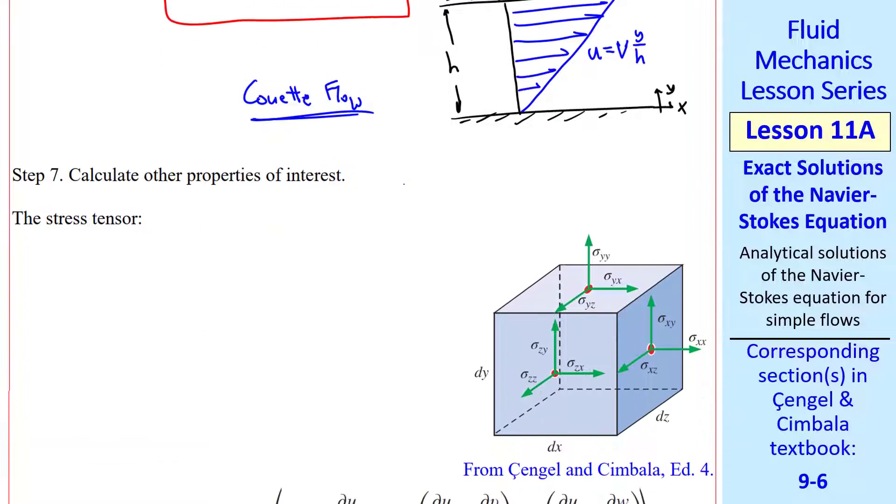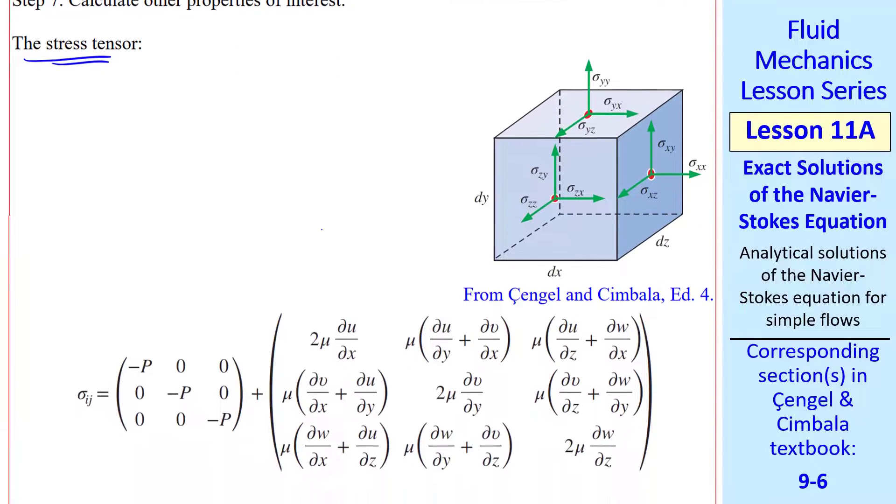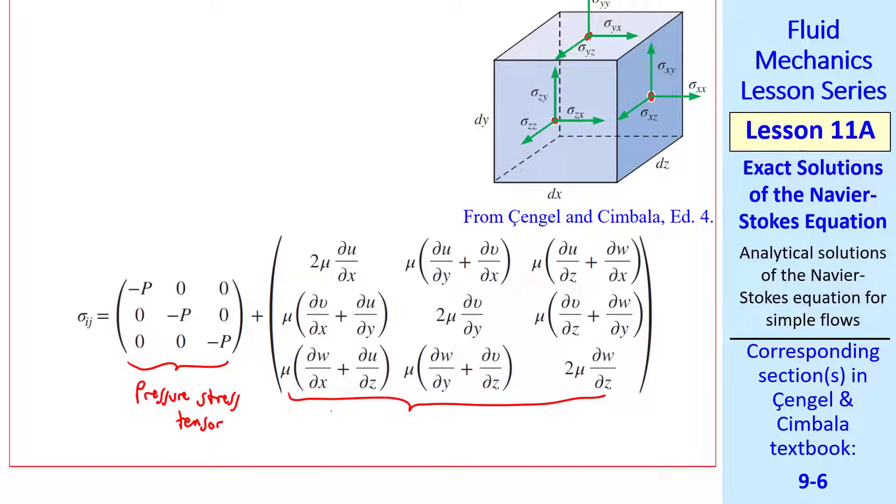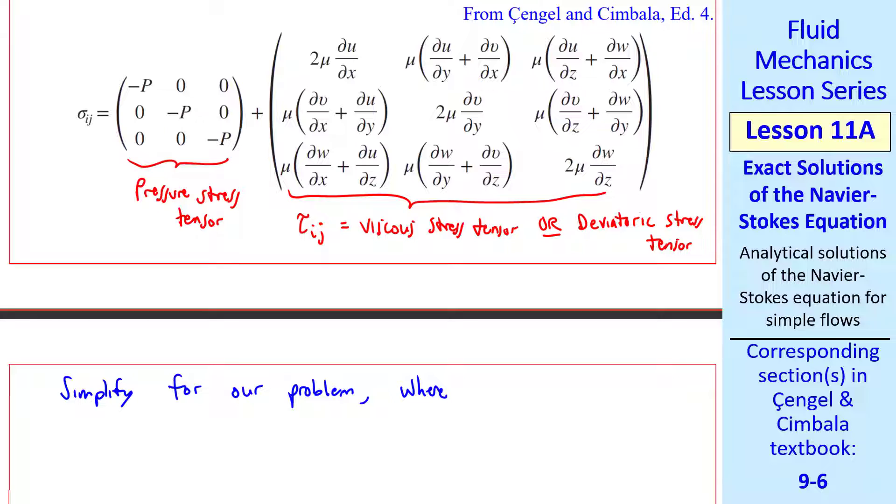Finally, step seven: calculate other properties of interest. I'll look at the stress tensor. Recall, the stress tensor is a second order tensor with nine components. The first part is the pressure stress tensor with only normal components. The second part is tau ij, the viscous or deviatoric stress tensor. It represents the part due to viscosity and does not contain pressure, but does have both normal and shear stresses.